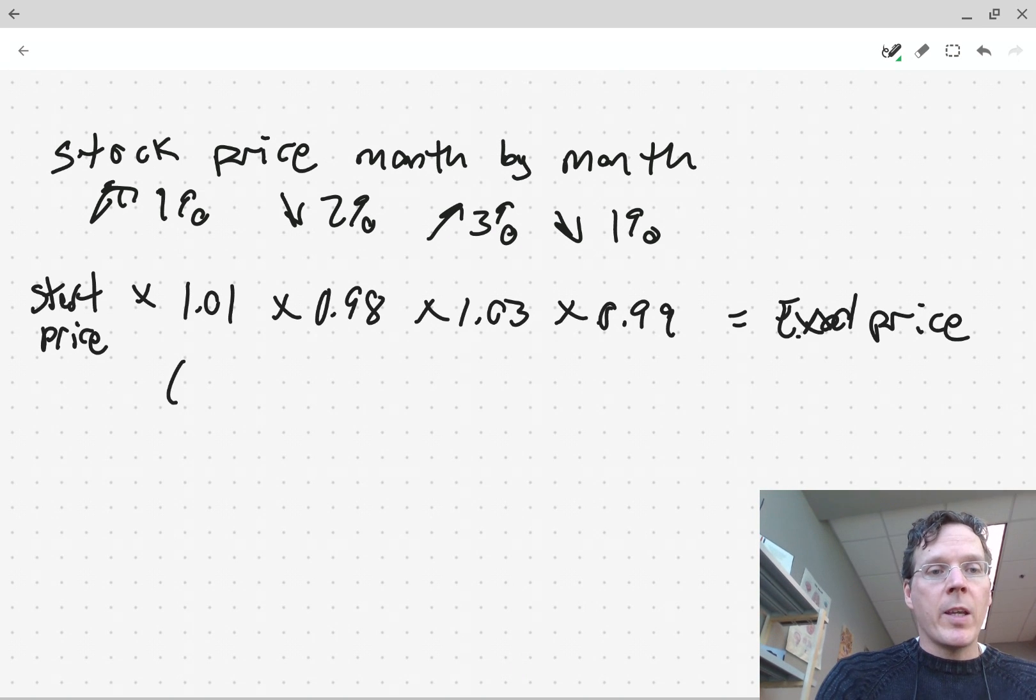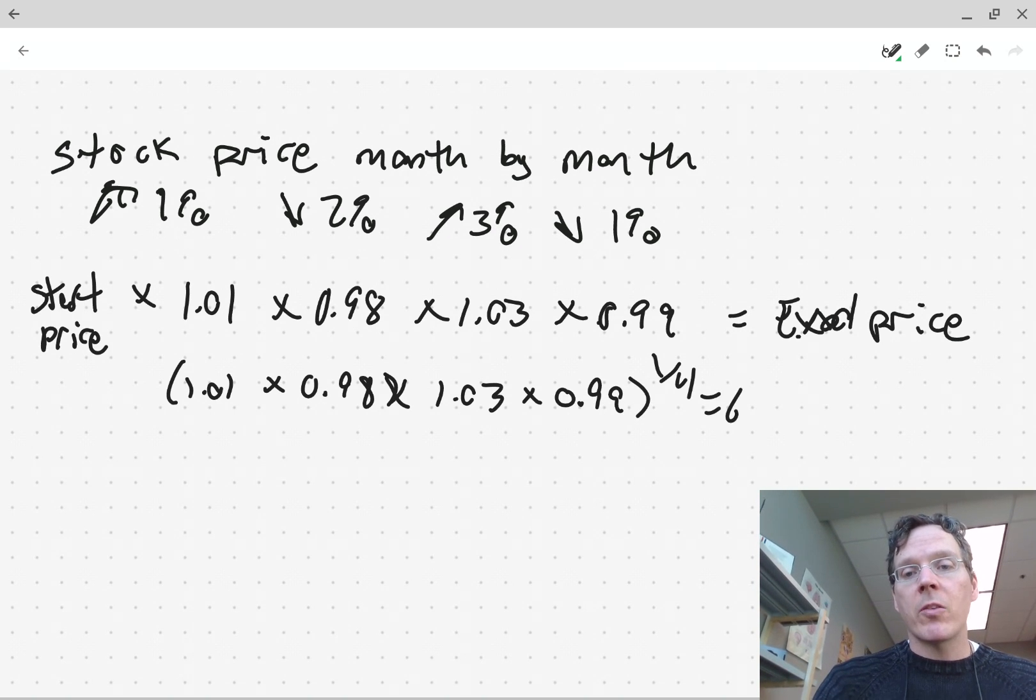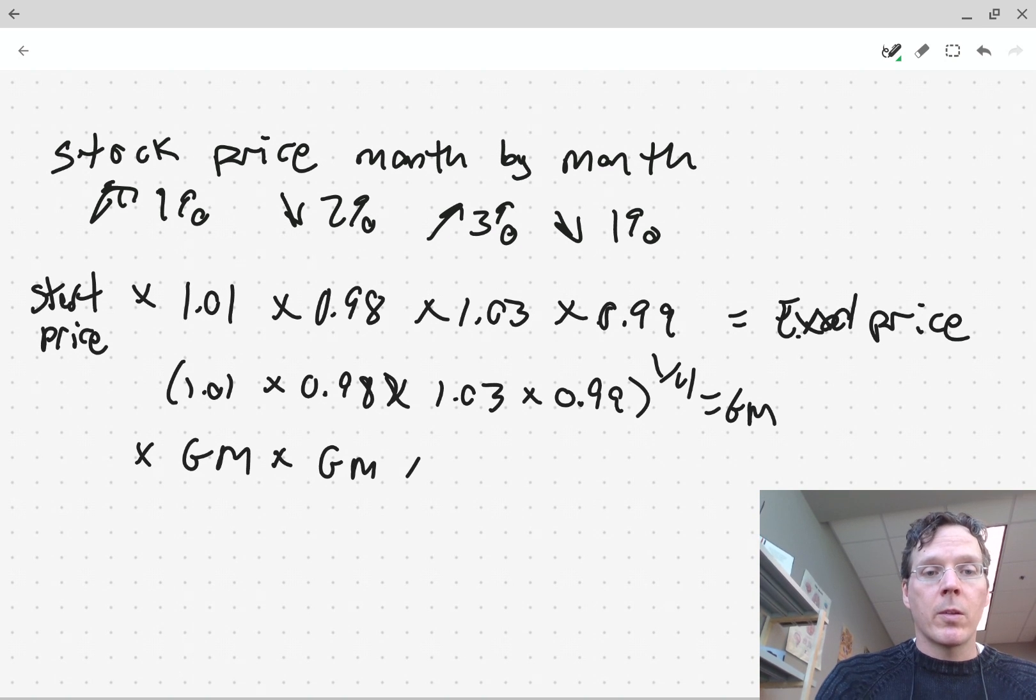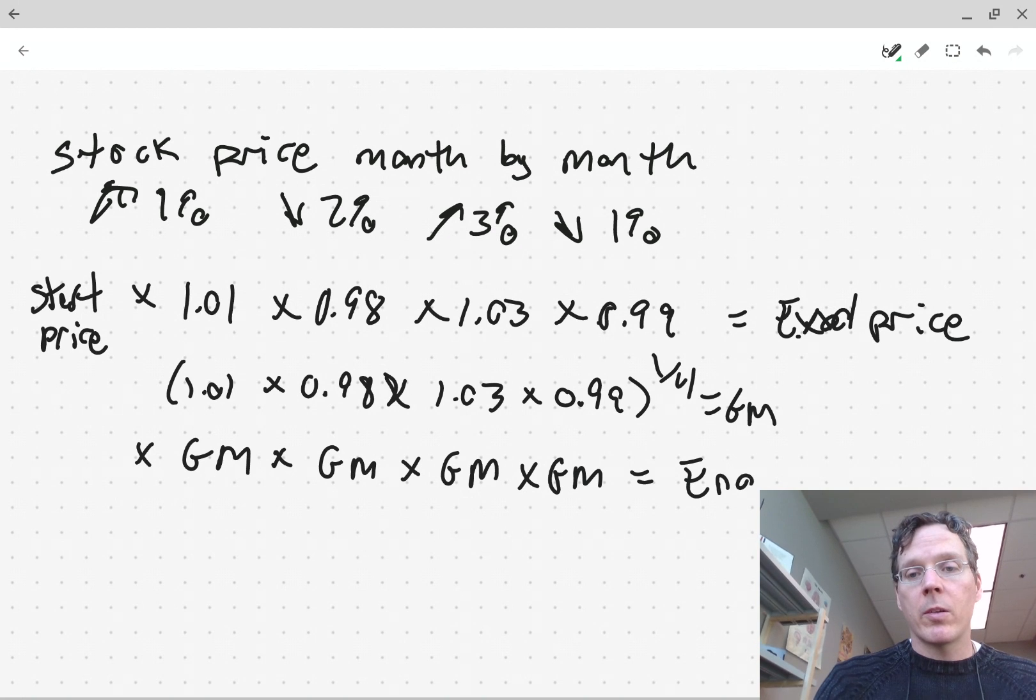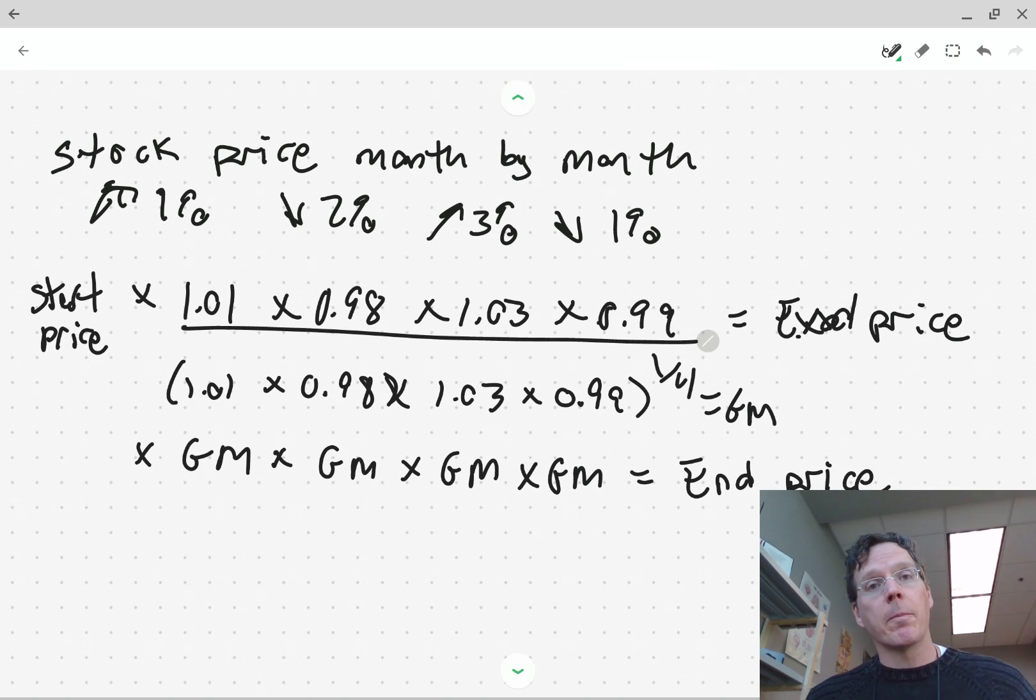So that's great. But now if I were to take 1.01 times 0.98 times 1.03 times 0.99, I would take that part right there, raise it to the fourth power—that's the geometric mean. Now notice if I multiply the start price times the geometric mean four times, I wind up with the end price. And you can see that, right? If I raise this to the fourth power, the geometric mean raised to the fourth power is just going to be that number again.